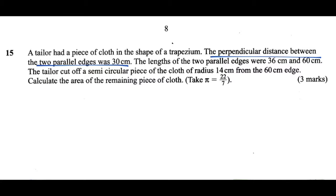The tailor cut off a semicircular piece of the cloth of radius 14 centimeters from the 60 centimeter edge. Calculate the area of the remaining piece of cloth. Take pi to be equal to 22 divided by 7.